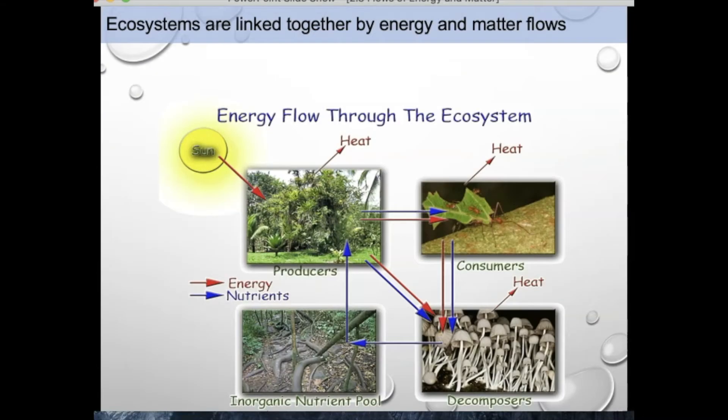In the second law of thermodynamics, we see that energy transformations proceed spontaneously to convert matter from a more ordered, less stable form to a less ordered, more stable form. Energy is lost as heat from each level — energy at one level is less than the previous level because of these losses due to entropy. Pause the video and identify the inputs, outputs, flows, storages, transfers, and transformations.